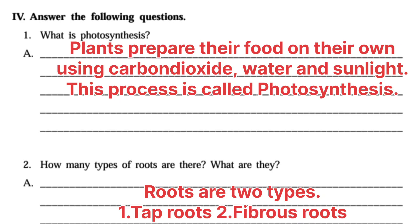What is photosynthesis? Plants prepare their food on their own using carbon dioxide, water, and sunlight. This process is called photosynthesis. Second question: how many types of roots are there? What are they? Answer: roots are of two types — first one: tap roots; second one: fibrous roots.